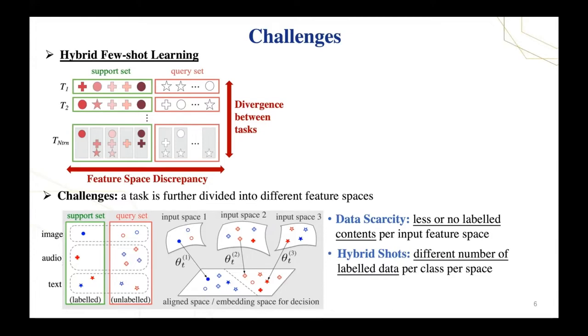We can also observe there could be a hybrid number of labeled samples per class in each space. For n-way k-shot classification where each class has k labeled examples, each feature space and each class ends up with less than k-shot or even zero-shot labeled samples. This also brings difficulty to model training.